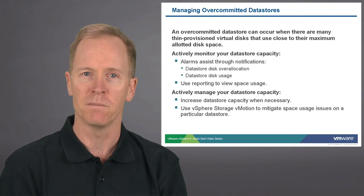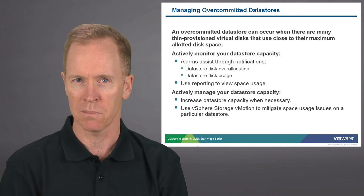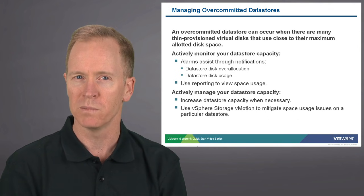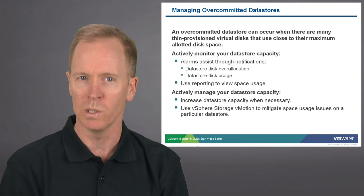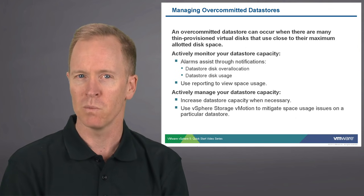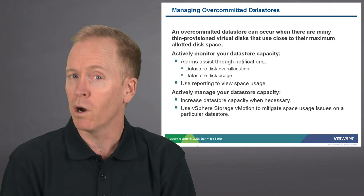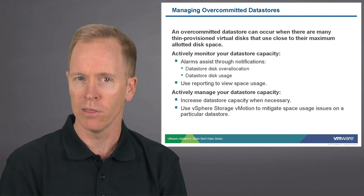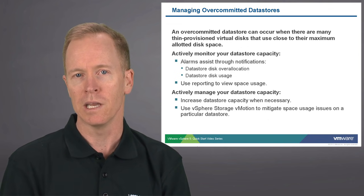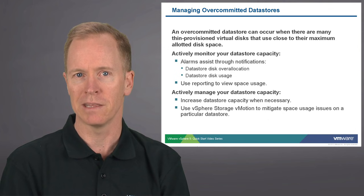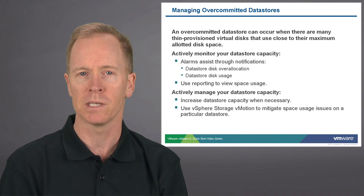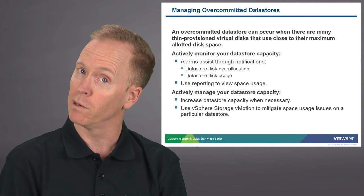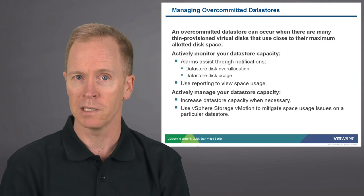On our shoulders, we take on the task of actively monitoring your data store capacity. We have two alarms: the first alarm detects the moment you overcommit a data store and will let you know through an alert. Additionally, once a data store has been overcommitted — or even if you aren't overcommitting — we have another alarm that keeps you posted on how much storage space a particular data store is using. By default, that alarm will trigger a yellow warning when you exceed 75% disk utilization, and a red alert if you exceed 85% disk utilization.